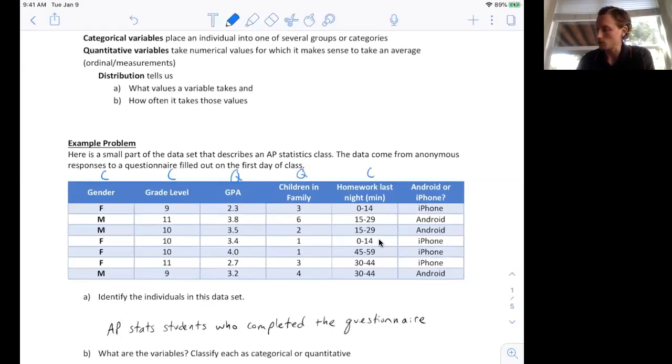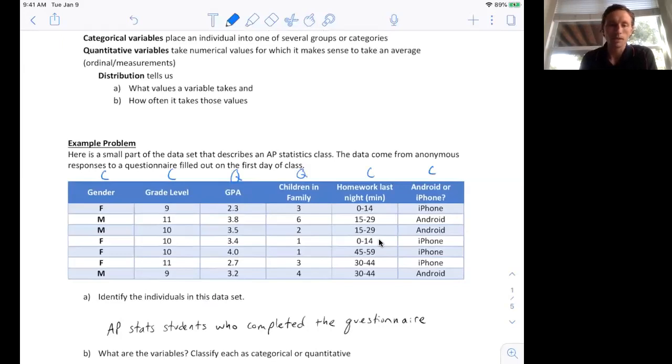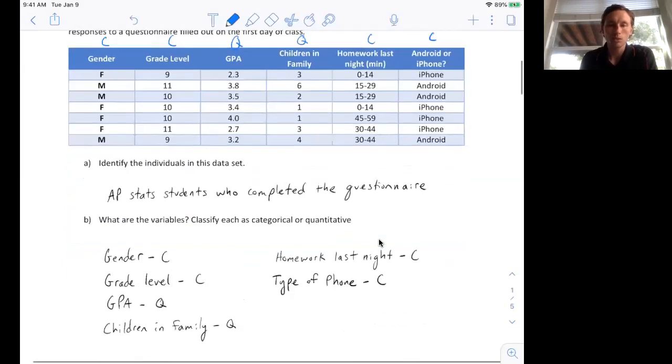And then lastly, an Android phone or an iPhone is also a category. So you can see how I put my answers as the variables and then just a Q or C to identify quantitative or categorical. Quantitative is not always numerical. I hope you can see that.